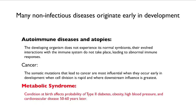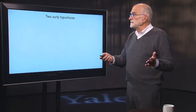Today we're going to talk about the metabolic syndrome — the third of these classes of early life effects. The condition at birth affects the probability of type 2 diabetes, obesity, high blood pressure, and heart disease 50 or 60 years later. It's an amazing delayed effect.